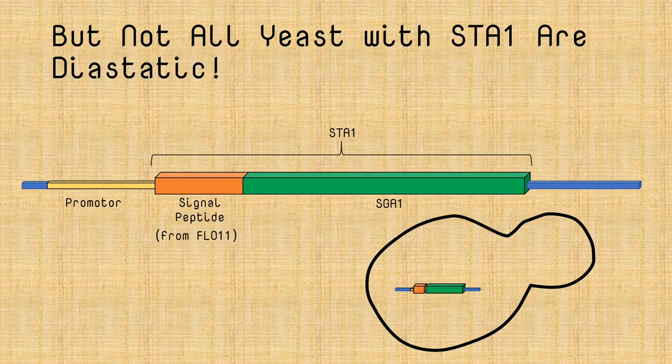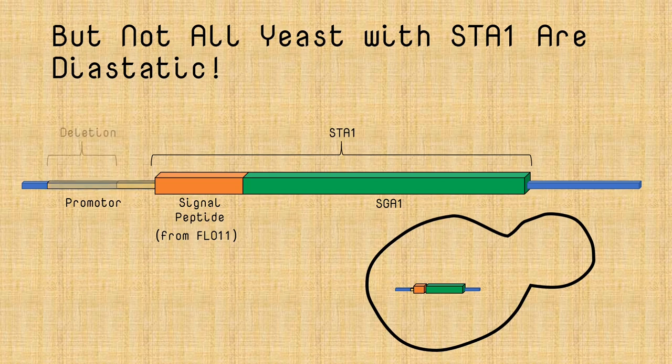But it's not quite as simple as that because it turns out there are yeast strains that have the STA1 gene, but they're not diastatic. And the reason behind this isn't entirely understood. A few strains have been identified where there's a deletion in the promoter region, and these yeast cells can no longer turn on the STA1 gene.